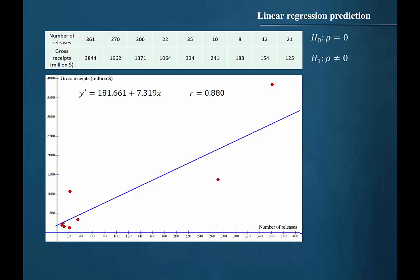We will conduct a hypothesis test about the significance of the correlation coefficient. We will begin by stating the hypotheses. The null hypothesis is rho equals 0 and the alternative hypothesis is rho not equal to 0.